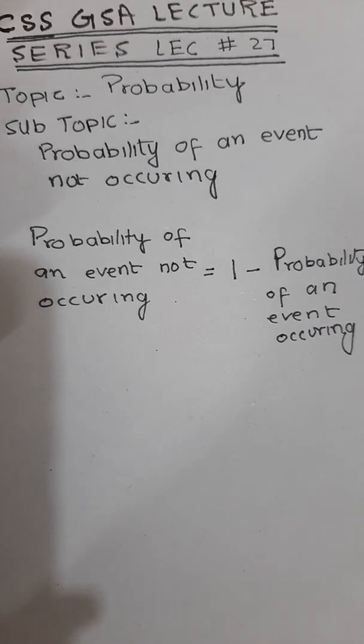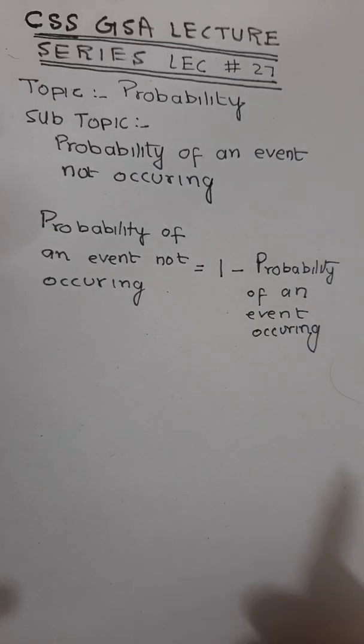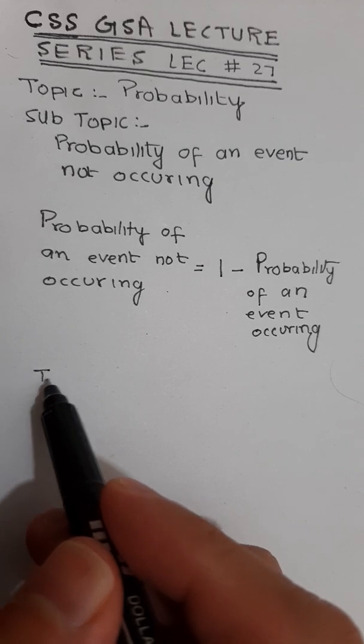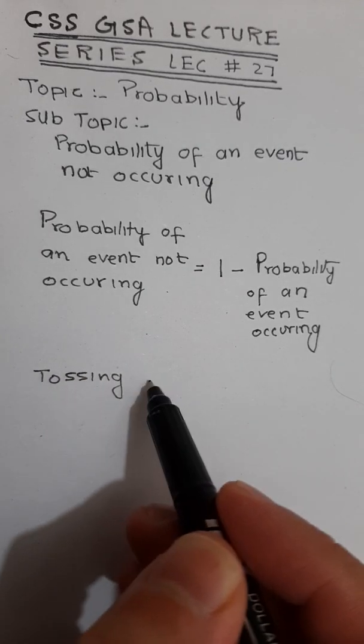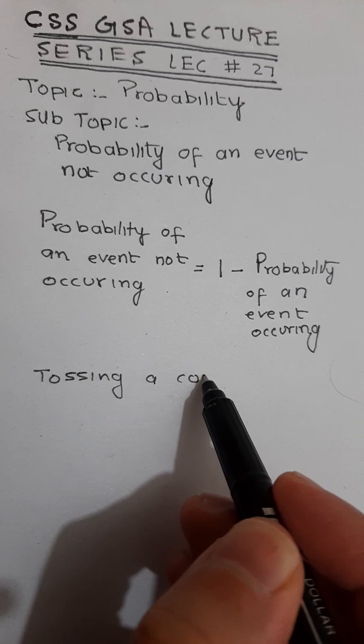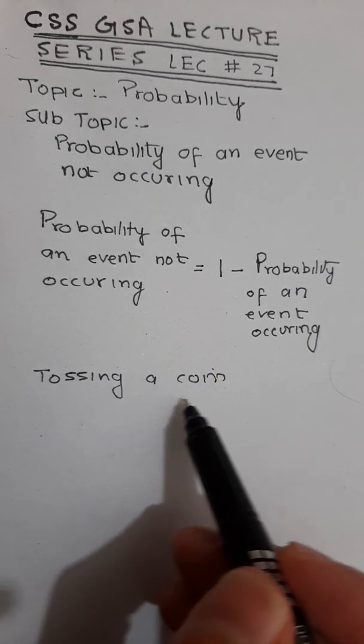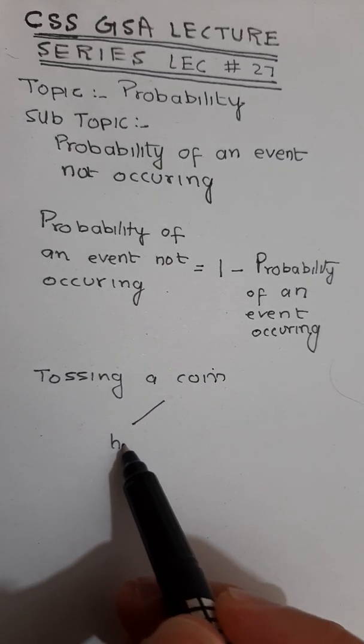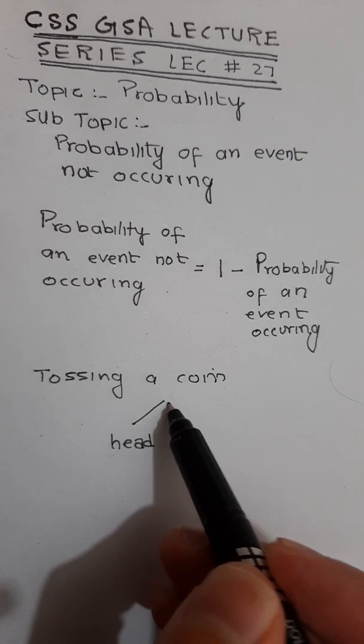I will explain this with the help of an example. Take the example of tossing a coin. Now when you toss a coin you have two outcomes: either you get a head or you get a tail.